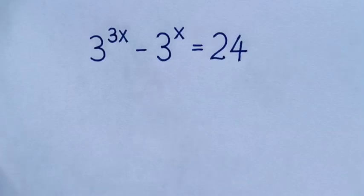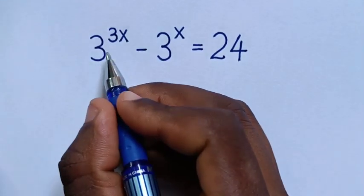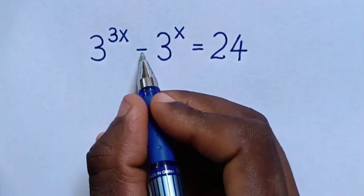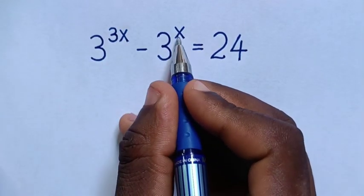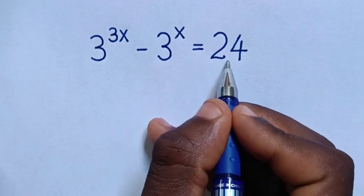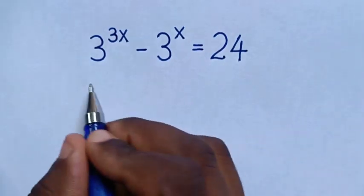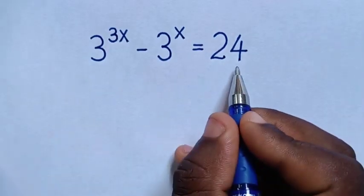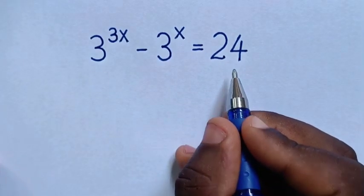Hello. How to solve 3 power of 3x minus 3 power of x is equal to 24, to find the value of x from this equation.